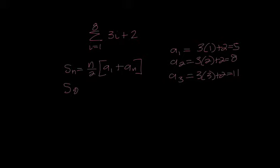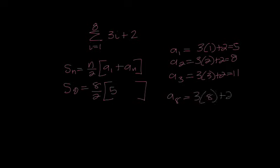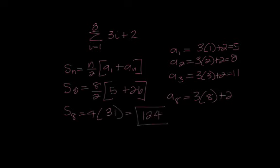So I'm finding the sum of 8 terms because it's telling me I'm going from the first term to the 8th term. So I'm going to say 8 over 2. I already found that my first term here is 5. And our nth term is going to be the 8th term. So I need to figure out, well the 8th term is 3 times 8 plus 2, which is 26. So I have 4 times 31 here. So I would get 124 as our answer.